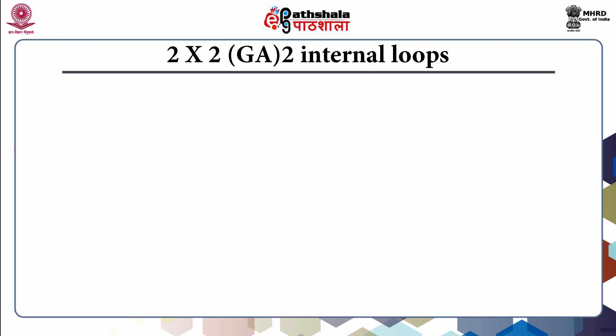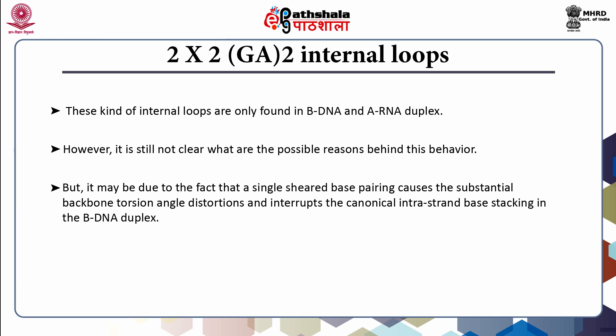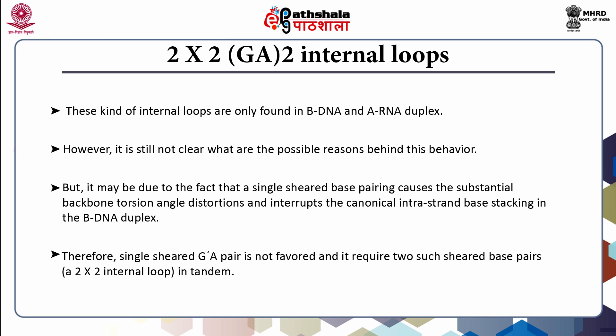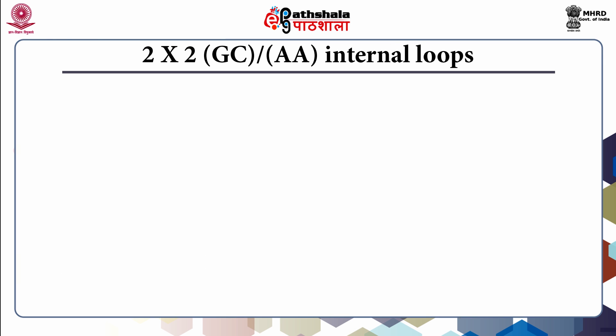Another kind is the 2×2 GA2 internal loop. These internal loops are only found in B-DNA and A-RNA duplexes. However, it is not clear what the possible reasons behind this behavior are. It may be due to the fact that a single sheared base pairing causes substantial backbone torsion angle distortion and interrupts canonical intrastrand stacking in the B-DNA duplex. Therefore, a single sheared GA pair is not favored and it requires two such sheared base pairs — a 2×2 internal loop in tandem. Next is the 2×2 GCAA internal loop.